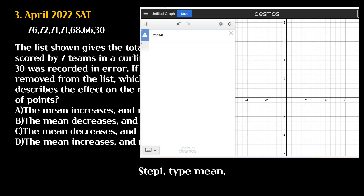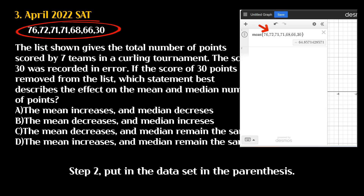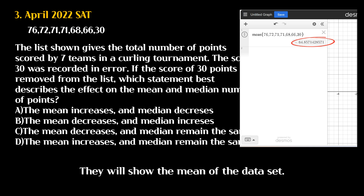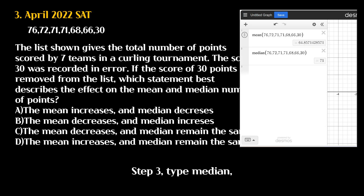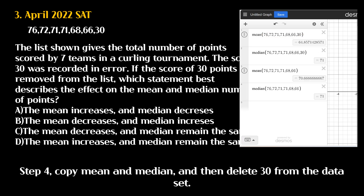Step 1: Type mean, or click the keypad button and then choose mean. Step 2: Put in the data set in the parenthesis. It will show the mean of the data set. Step 3: Type median, or use the keypad button, and then copy the data set. Step 4: Copy mean and median, and then delete 30 from the data set.